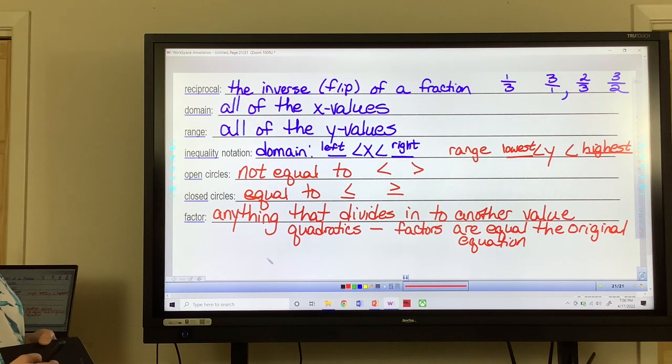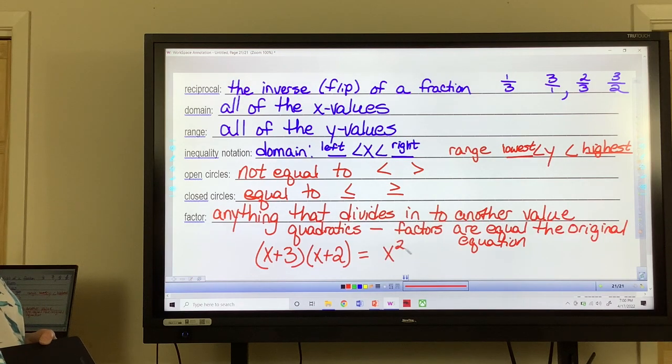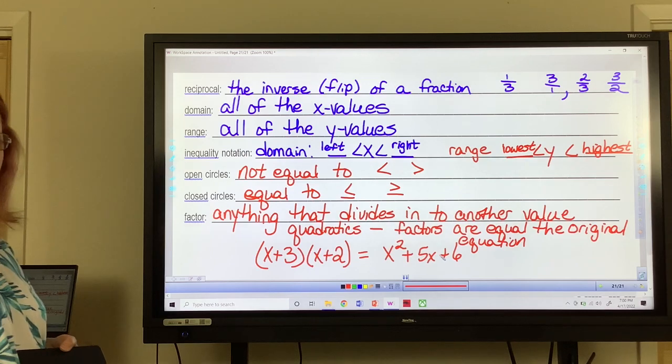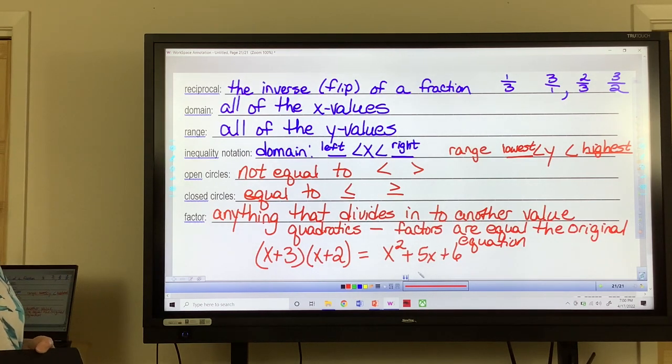Factors are equal to the original equation. For example, if I had x plus 3 and then x plus 2, that's factors. The x plus 3 is a factor, the x plus 2 is a factor. And they're going to equal x squared plus 5x plus 6. And so they're going to be equivalent. You can graph them and see which ones match up.